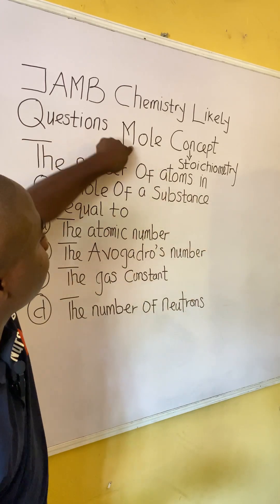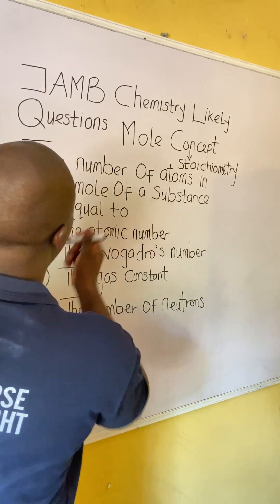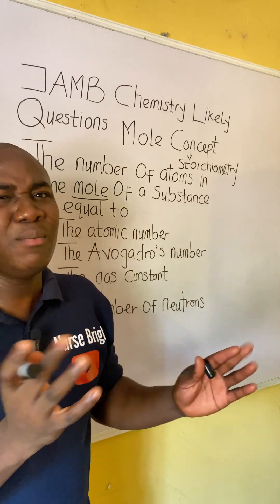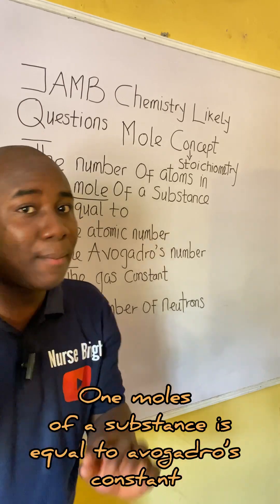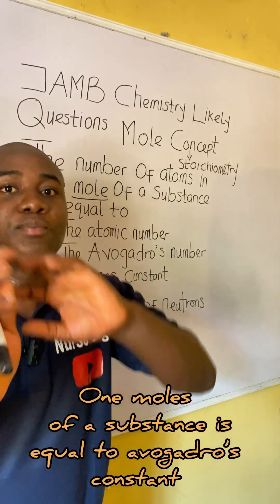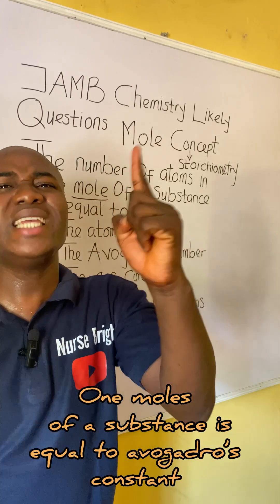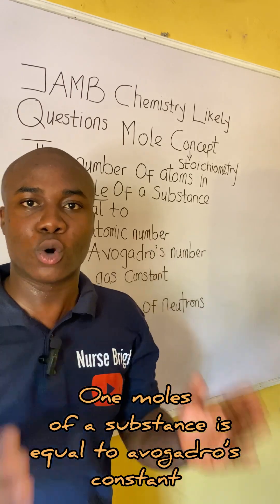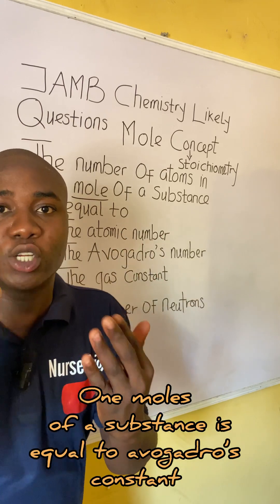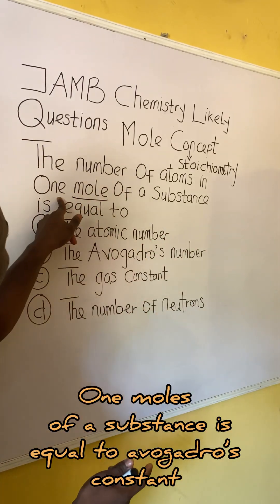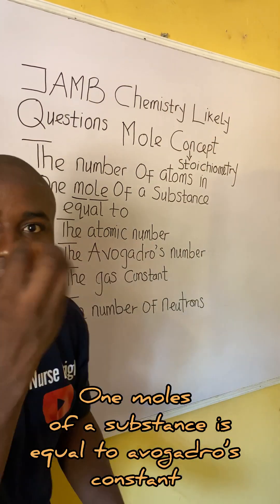How did I know that this question is from mole concept? I saw a very important word in this question, and that word was 'mole.' So seeing 'one mole of a substance,' I already know that one mole of a substance is equal to what we call Avogadro's constant or Avogadro's number. So from what I just said, we'll be able to solve this question: one mole of a substance is equal to Avogadro's number.